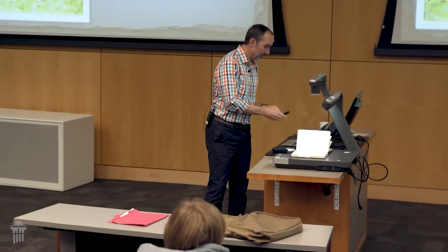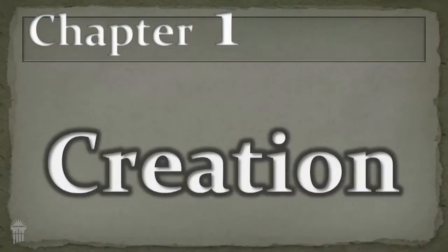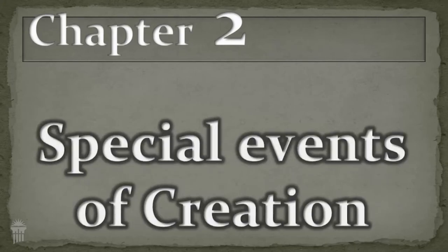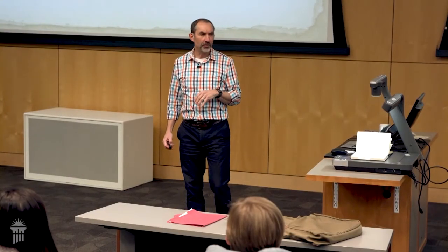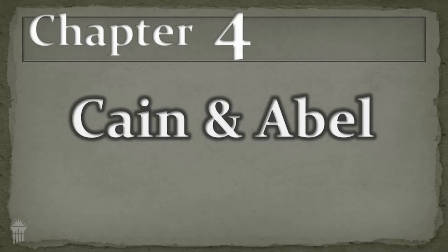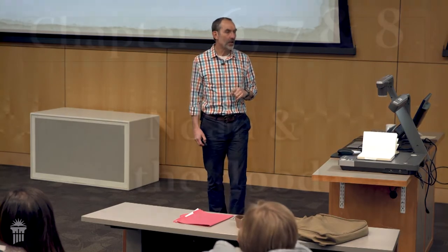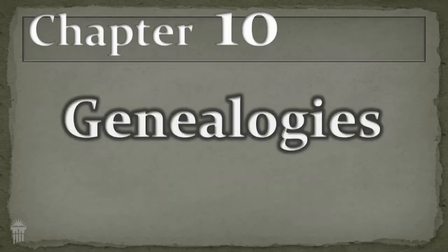So 4,000 years of Old Testament history. We're going to start in the first 11 chapters of Genesis by assigning some key words and phrases. The key word for chapter 1 is creation. Chapter 2 is special events of creation — God really drills down and tells us all that happened on day number 6. Chapter 3 is the fall of Adam and Eve. Chapter 4, Cain and Abel. Chapter 5 seems really useless — genealogies — but they are incredibly rich theology. Genesis chapters 6, 7, and 8 are Noah and the flood. Chapter 9 is Noah after the flood. And chapter 10, just like 5, genealogies.